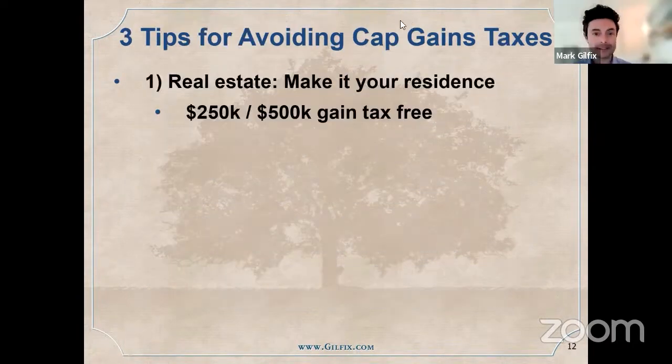When you sell your house, if it's your residence and you've lived there for at least two of the last five years, if you're single, the first $250,000 in gains is not taxed. So if you bought your house for $500,000 and sell it two years later for $750,000, that's a $250,000 gain and you pay zero capital gains tax.